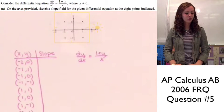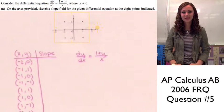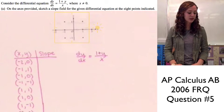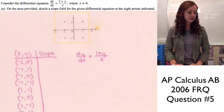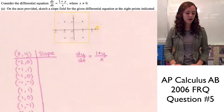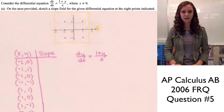Today we're going to be doing question number 5 from the 2006 AP Calculus Test. This question says: consider the differential equation dy/dx equals (1 + y) over x, where x is not equal to 0.